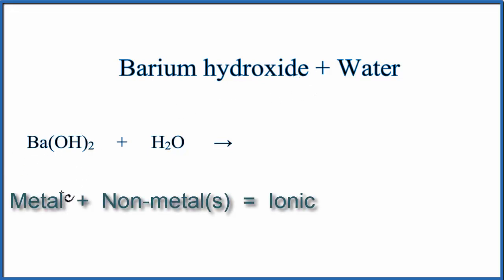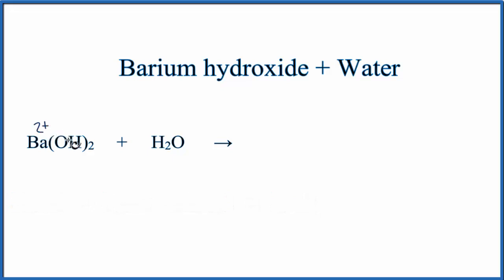So we'll go to the periodic table, look up the ionic charge on barium, and barium's in group 2, so it has a 2 plus charge. And then the hydroxide, because it's a polyatomic ion, we'll look it up on a table of common polyatomic ions. Hydroxide has a negative 1 charge.